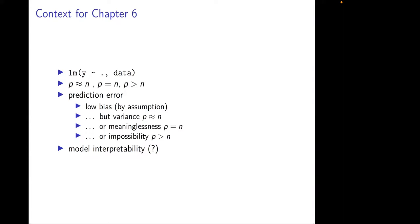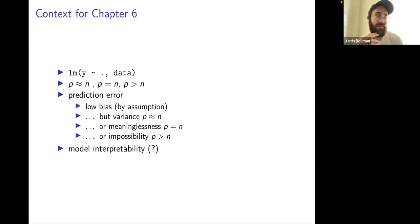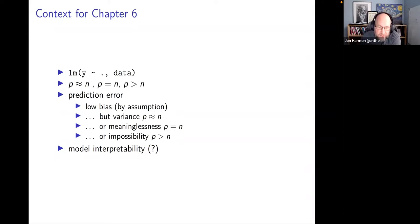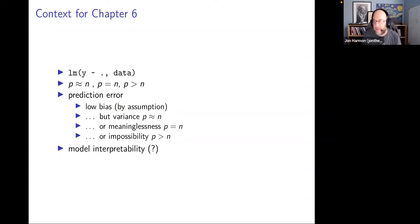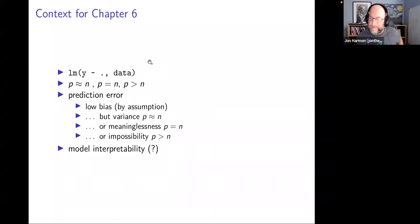My recollection from reading this chapter is that some of these methods preserve interpretability and some don't. It's just one of the considerations in looking at these various methods. There is some scale to it — if you have a thousand variables, technically you can interpret all of them, but it's still harder to understand than if there are three. So it's just a sheer-number type thing.